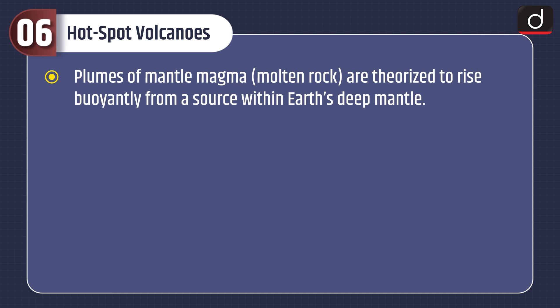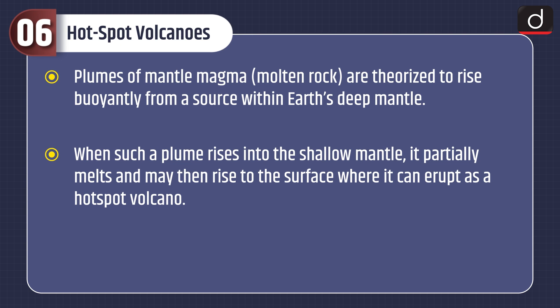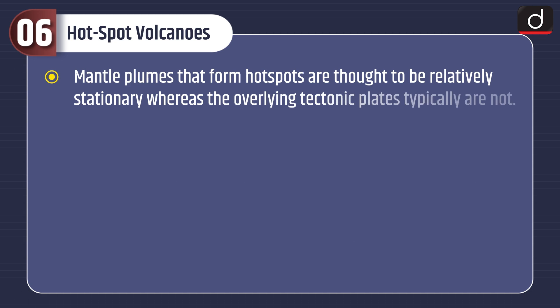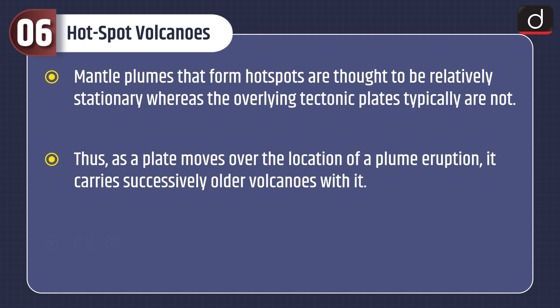Now let's discuss about hotspot volcanoes. Plumes of mantle magma — molten rock — are theorized to rise buoyantly from a source within Earth's deep mantle. When such a plume rises into the shallow mantle, it partially melts and may then rise to the surface where it can erupt as a hotspot volcano. Hotspot volcanism is distinct in that it does not originate at boundaries of Earth's tectonic plates. Mantle plumes that form hotspots are thought to be relatively stationary, whereas the overlying tectonic plates typically are not. Thus, as a plate moves over the location of a plume eruption, it carries successively older volcanoes with it.